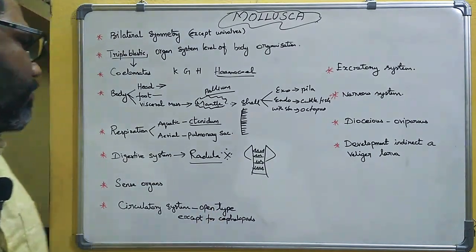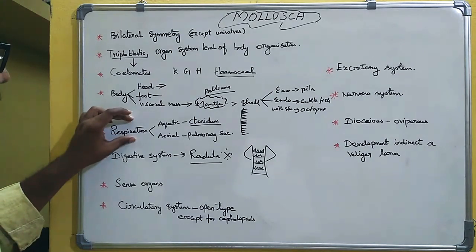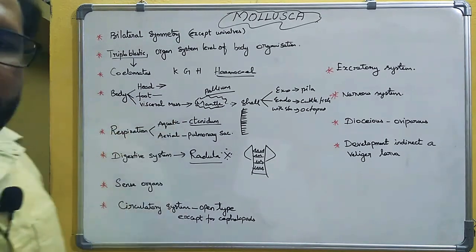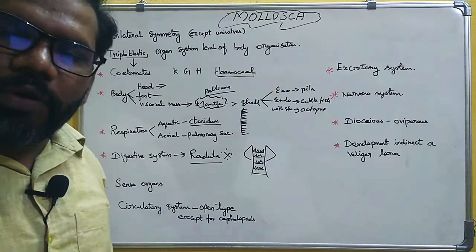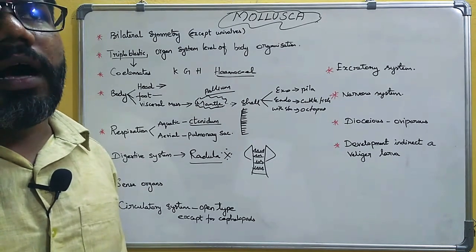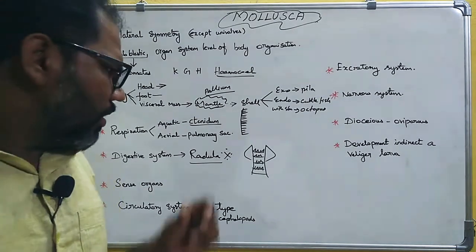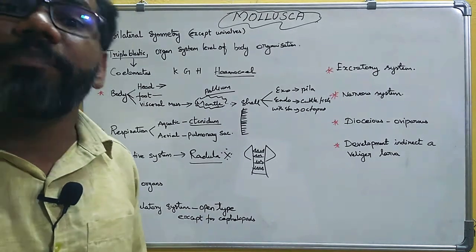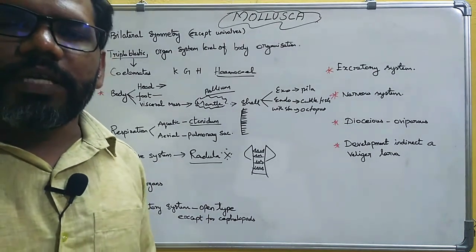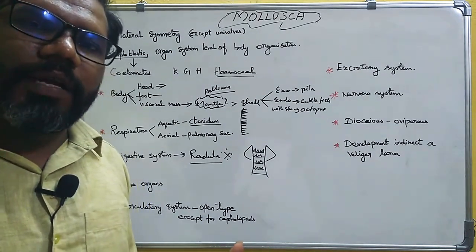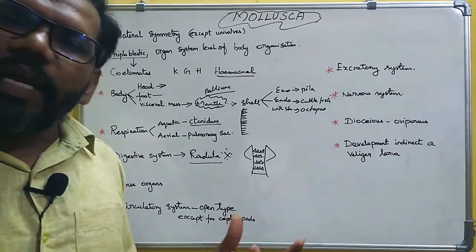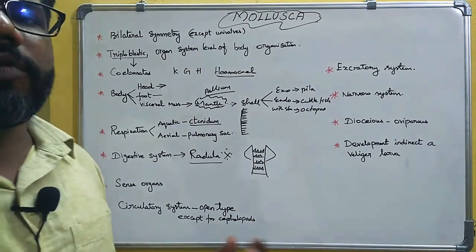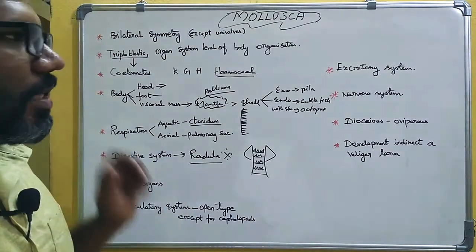Mollusca have an open type of circulatory system. Respiration can be aquatic via ctenidia or aerial. An important respiratory pigment is hemocyanin, which contains copper. Hemocyanin is the respiratory pigment used for oxygen transport.